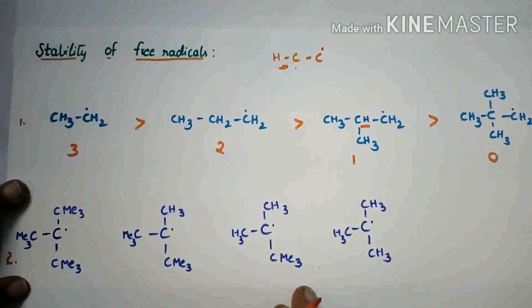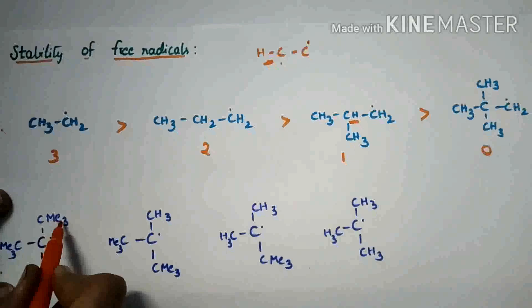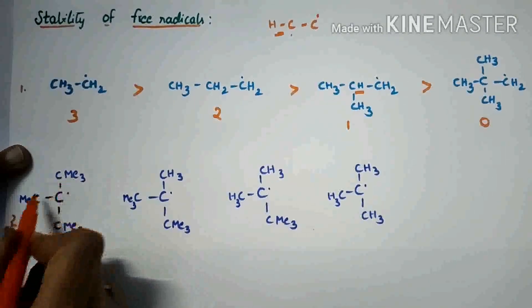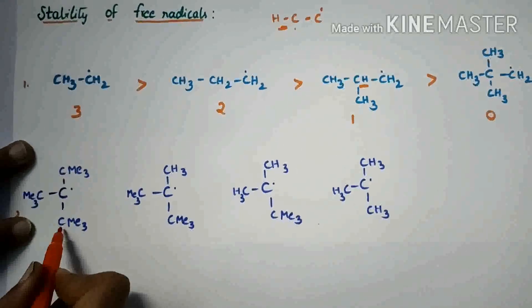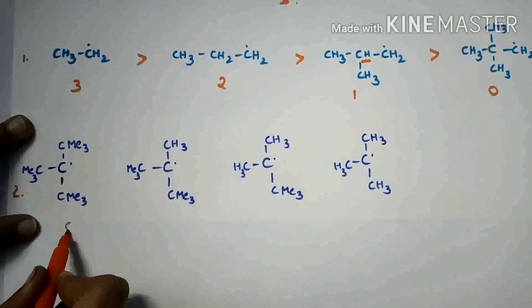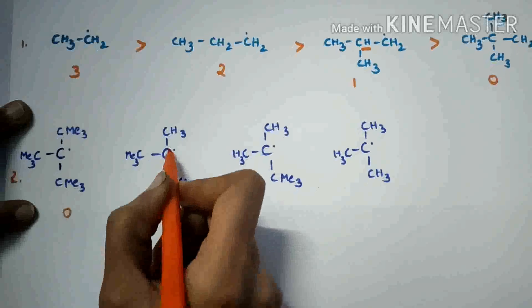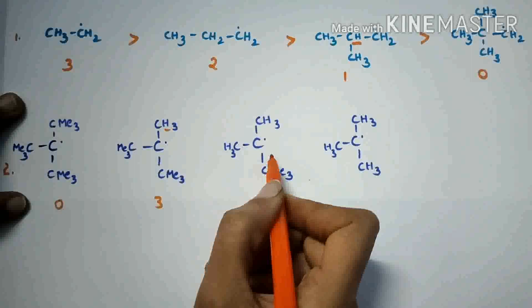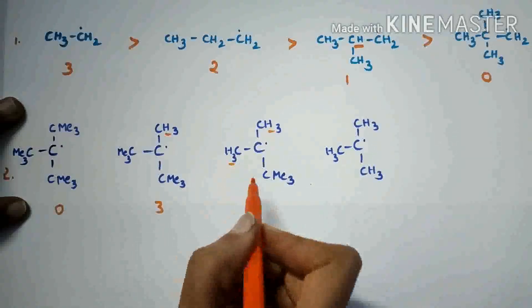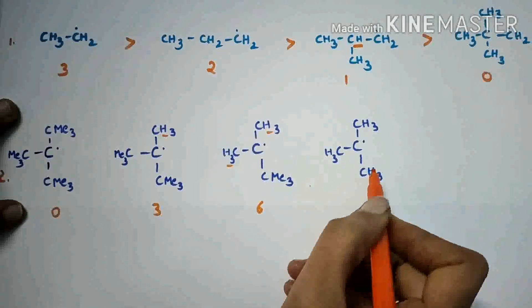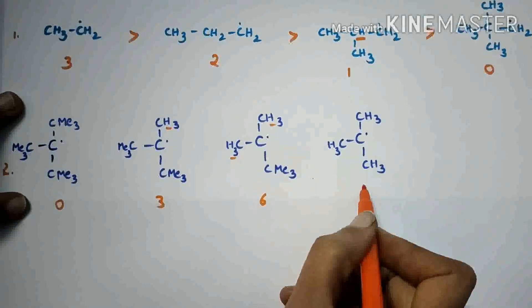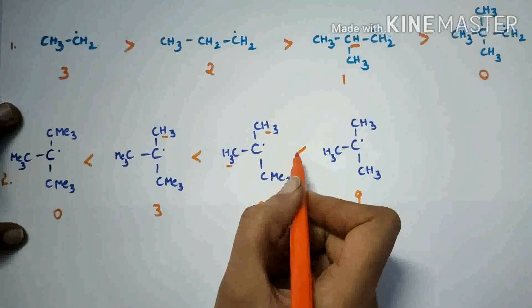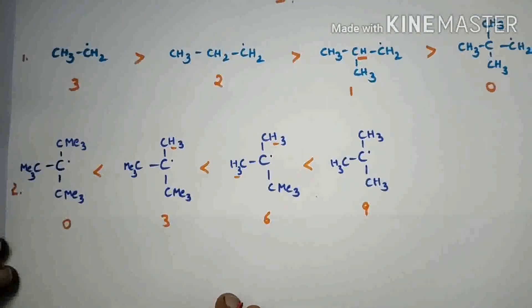In this next question, these are the methyl groups. On this carbon, there are no alpha hydrogens. On these carbons also, there are no alpha hydrogens. In the next compound, there are three alpha hydrogens. In this compound, three plus three — six alpha hydrogens. And in this compound, nine alpha hydrogens. So the stability order is as follows. Thanks for watching.